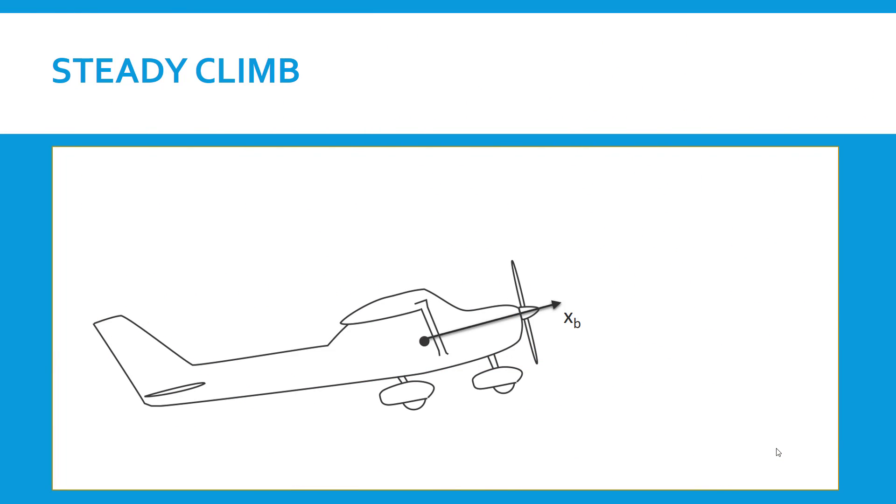The first situation that we will consider is a steady climb of an aircraft. As we can see, we have a Cessna in a climb-oriented attitude. The body-fixed coordinate system longitudinal axis of the airplane is designated as XB.